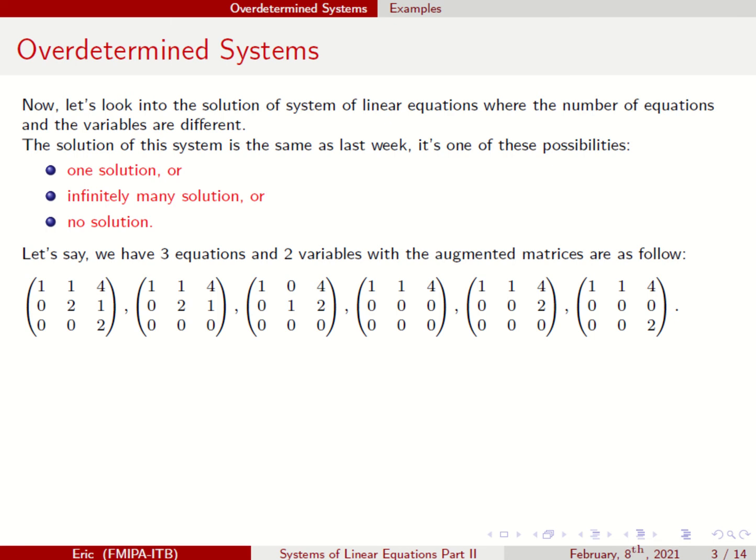After you do elementary row operations, you have this upper triangular matrix — the row echelon form. You have Y here, and with back substitution you can find X. So the three equations become just two equations: two equations and two variables, which means you have only one solution.